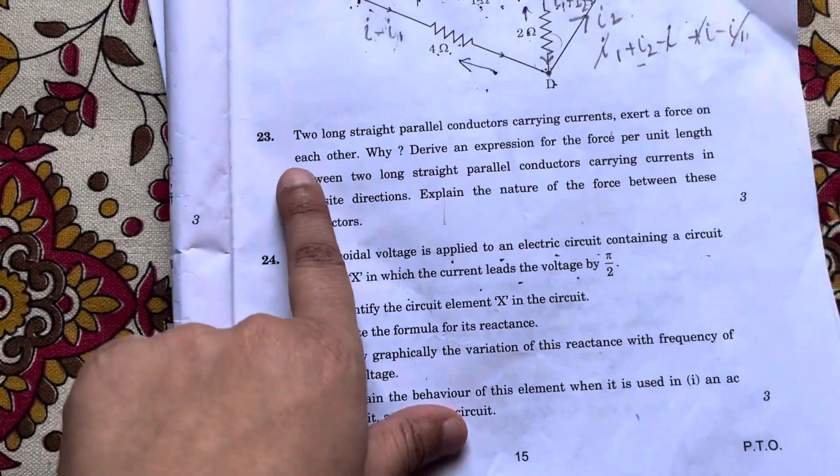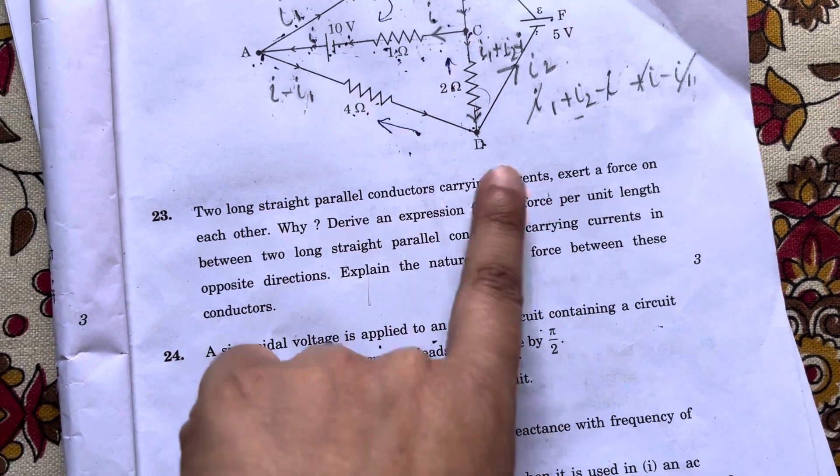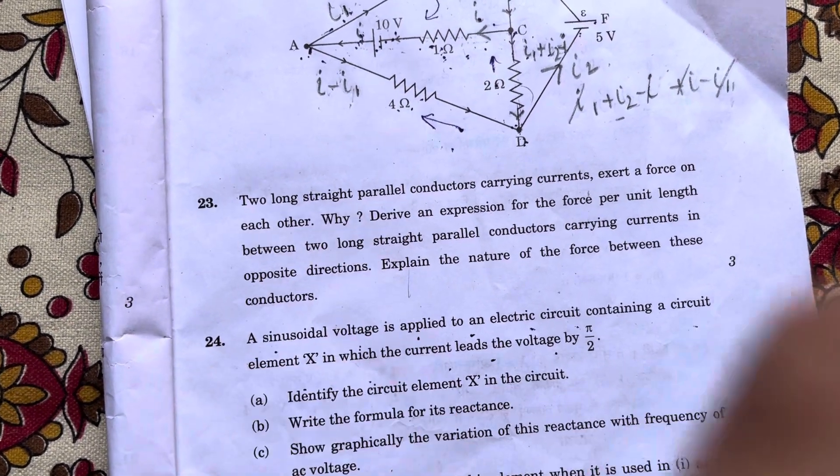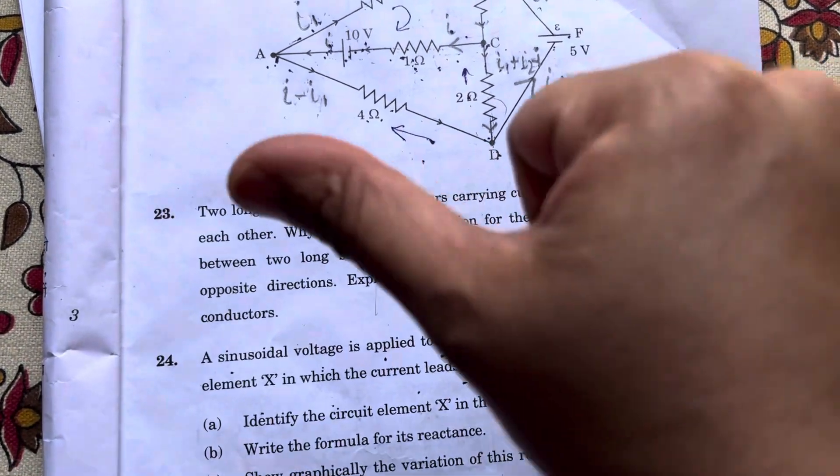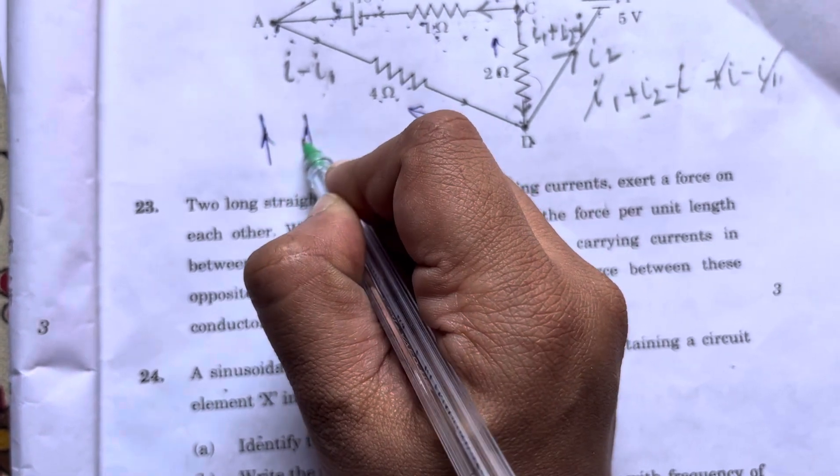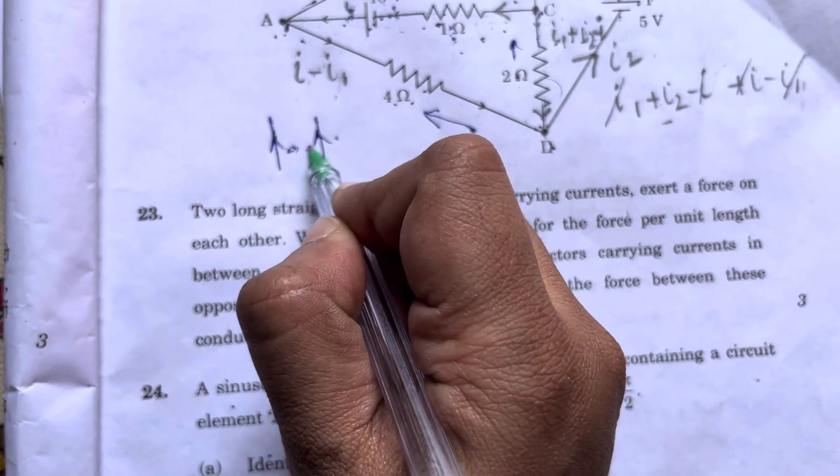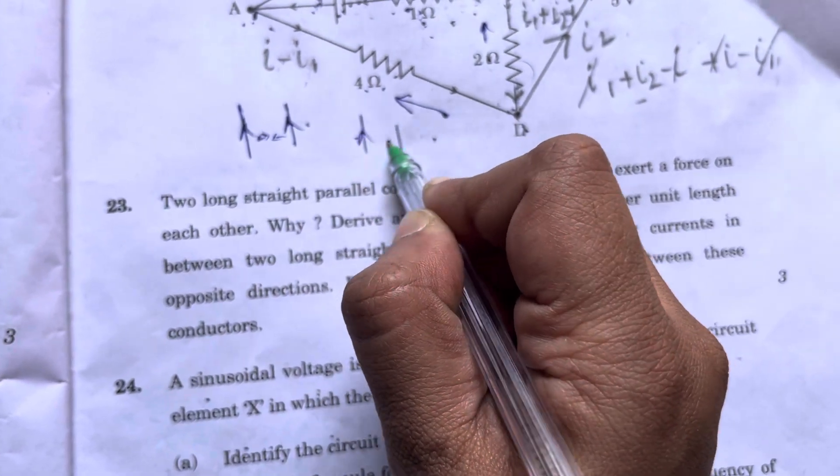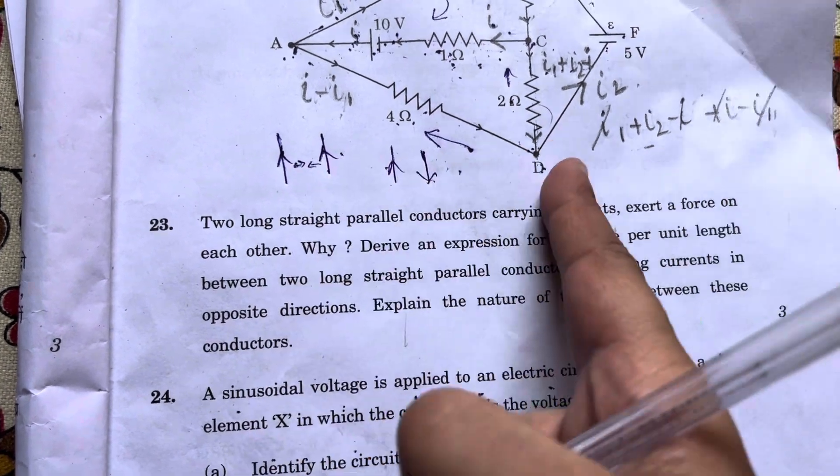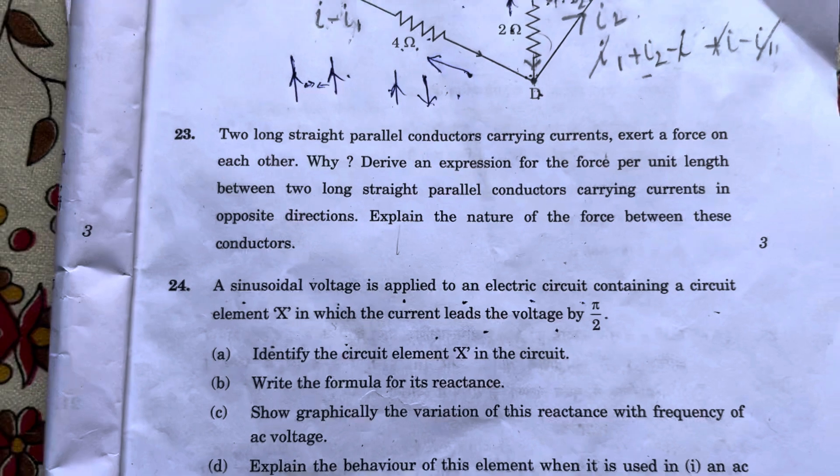Good morning students. Next question is 23. Two long straight parallel current carrying conductors exert a force on each other. Why? Of course they will exert a force on each other because when two straight current carrying conductors have current in the same direction, they will attract. If they go in the opposite direction, then they will repel each other. This is the derivation which you know very well.